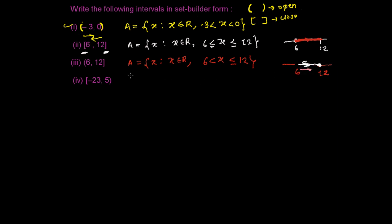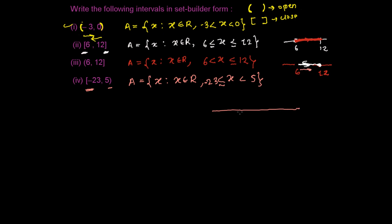So if this is set A and X is a member of set A, then X such that X belongs to R — real numbers — X is greater than or equal to minus 23 but smaller than 5. If you look at the number line, suppose this is minus 23 and this is 5.